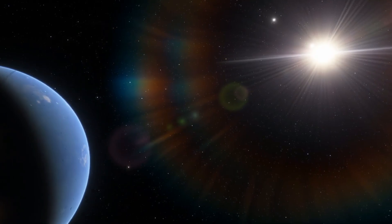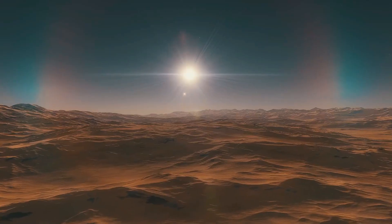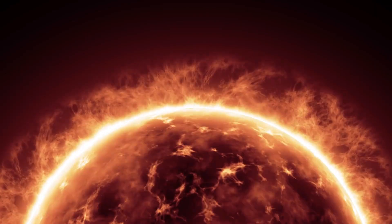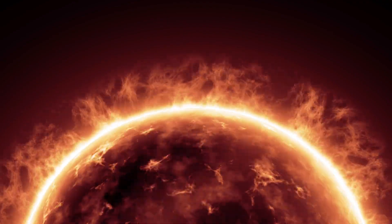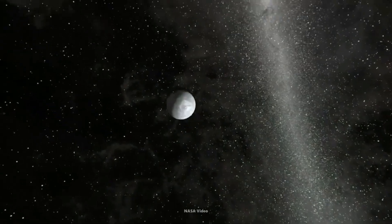Now, you can't talk about Proxima Centauri b without shining a little spotlight on its host star, Proxima Centauri. It's a red dwarf, smaller and cooler than our sun, but it packs a punch in terms of flares and radiation. And guess what? Proxima Centauri b is cozying up in that star's habitable zone.